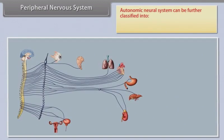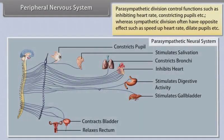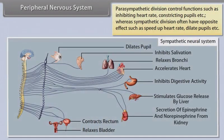The autonomic neural system can be further classified into parasympathetic and sympathetic neural systems. The parasympathetic division controls functions such as inhibiting heart rate and constricting pupils, whereas the sympathetic division often has the opposite effect, such as speeding up heart rate and dilating pupils.